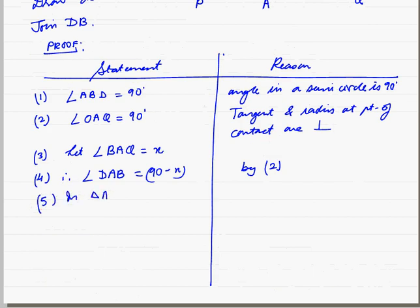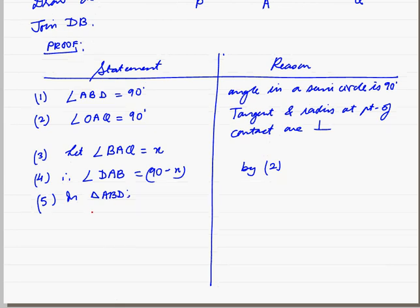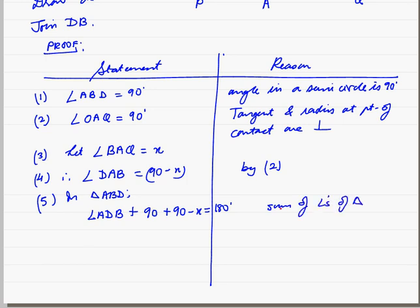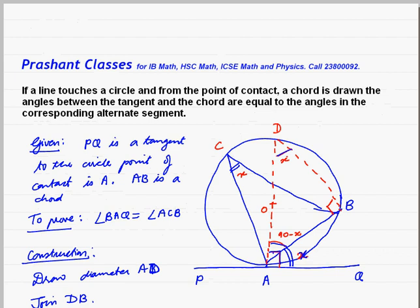In triangle ABD we have angle ADB plus 90 plus 90 minus x is equal to 180. Sum of angles of triangle. Therefore angle ADB will be x. So this angle we get x by sum of angles of triangle.